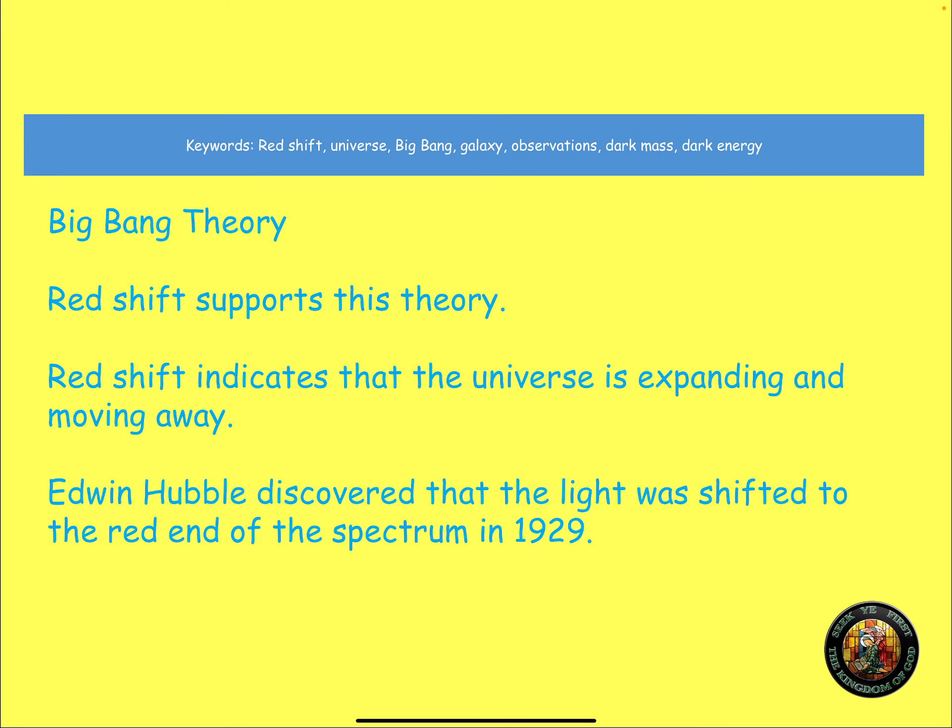The Big Bang Theory, well, red shift supports this theory. Red shift indicates that the universe is expanding and moving away. And Edwin Hubble discovered that the light was shifted towards the red end of the spectrum. And that happened in 1929.